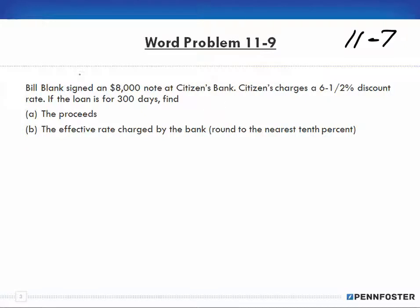Alright, so Bill Blank signed an $8,000 note. That's principal. Citizens charge 6.5% discount rate. That's a rate. And if the loan is 300 days time, find the proceeds and the effective rate. So remember our formula is interest equals principal times rate times time, regardless of what we call it. Principal could be face value or proceeds, rate can be just an interest rate or called an effective rate, and our time comes in different formats. It could be daily, weekly, monthly, yearly, whatever.